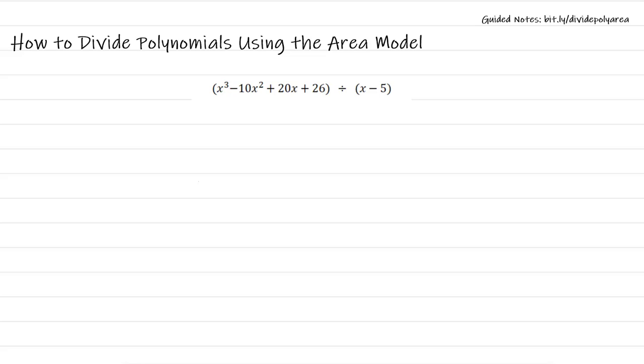Let's take a look at this next problem. I'm going to begin again by drawing my area model. And my divisor again has two terms. So I'm going to divide this into two parts representing the x and the minus 5.